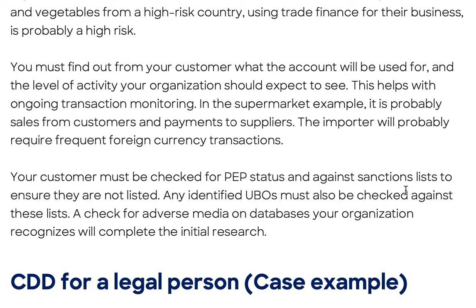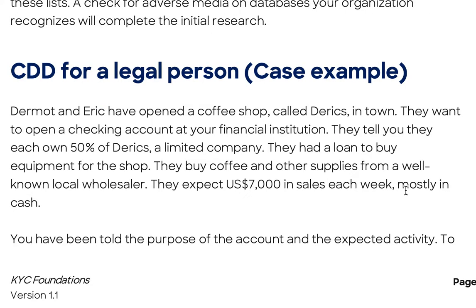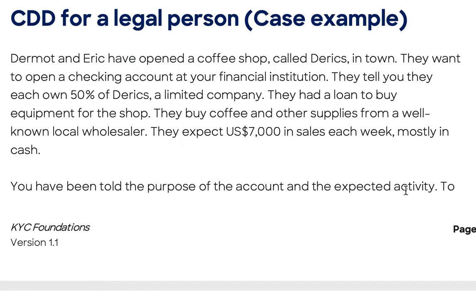A local supermarket is easily understood and is likely to be low-risk. An importer of fruits and vegetables from a high-risk country using trade finance for their business is probably high-risk. You must find out from your customer what the account will be used for and the level of activity expected — this helps with ongoing transaction monitoring. In the supermarket example, it is probably sales from customers and payments to suppliers; the importer will probably require frequent foreign currency transactions. Your customer must be checked for PEP status against sanctions lists, any identified UBOs must be checked against these lists, and a check for adverse media on recognized databases will complete the initial research.